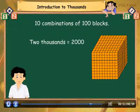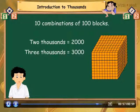Similarly, two thousand which is the group of two thousands, three thousand which is the group of three thousands, and so on.